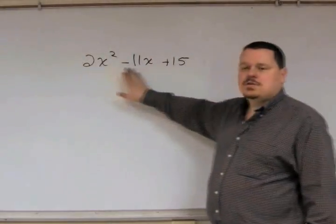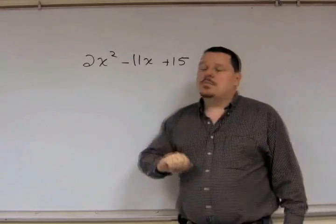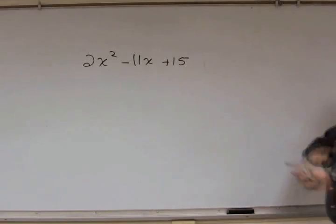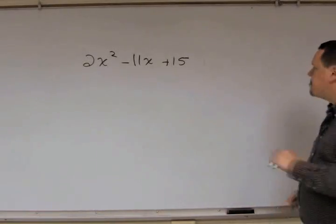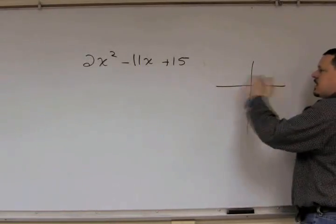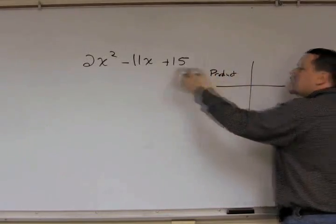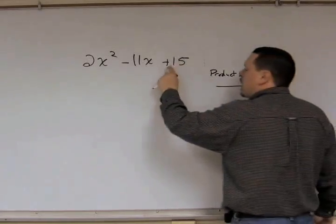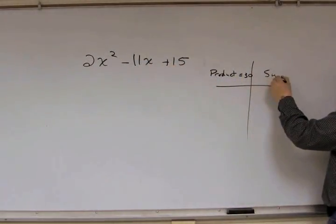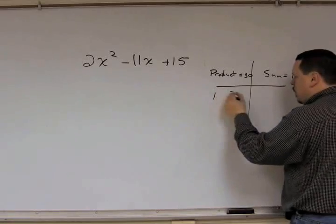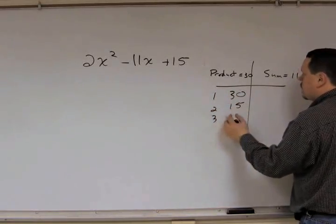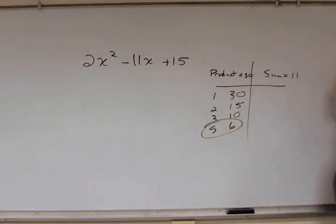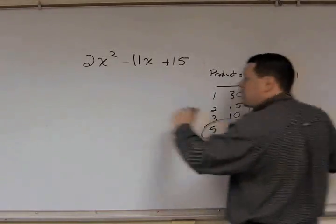Now we're going to work on 2x² − 11x + 15 using the same process. Off to the side: you want the product to be 2 times 15, which is 30, and the sum is 11. Checking factor pairs of 30: 1 and 30, 2 and 15, 3 and 10 — getting close — 5 and 6. Five plus 6 equals 11, so 5 and 6 are our pair of numbers.